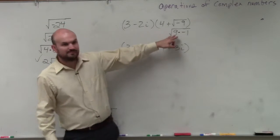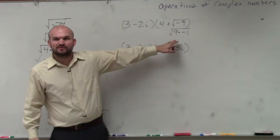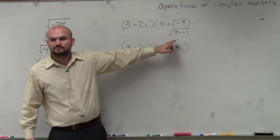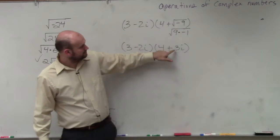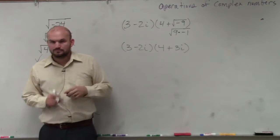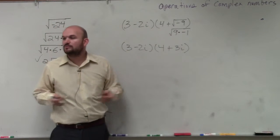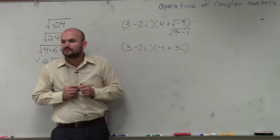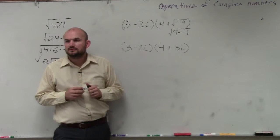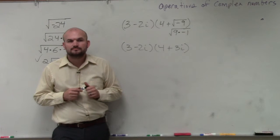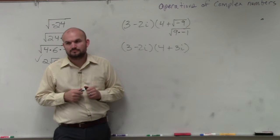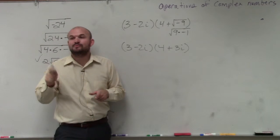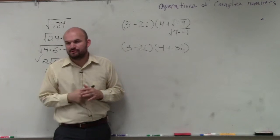Do you guys agree with my assessment? I'm just doing that a little bit quicker. Does that make sense, or where did I lose you? Because if you're doing 9 times negative 1, then i is going to be the plus and then the square root minus. The plus or minus comes when we introduce the square root.